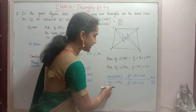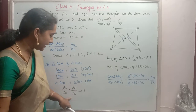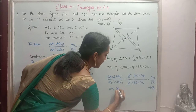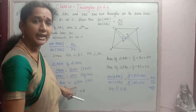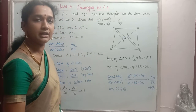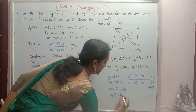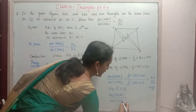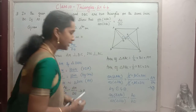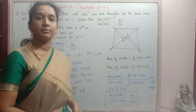So area of triangle ABC by area of triangle DBC equals AM by DN, which is equation 2. From equation 1, AM by DN equals AO by DO. Equating equations 1 and 2, area of triangle ABC by area of triangle DBC equals AO by DO. This is the required result. Hence proved. Thank you.